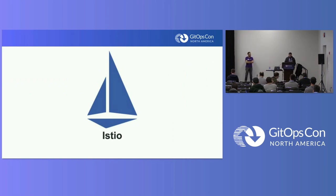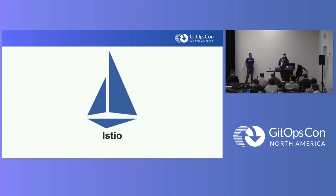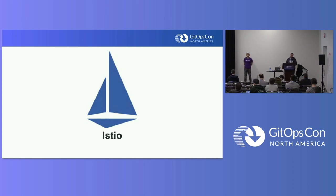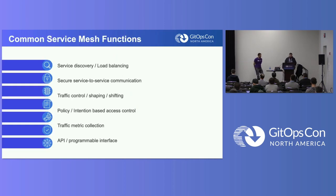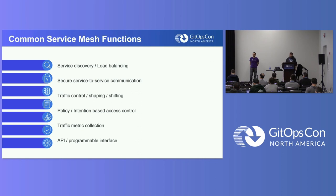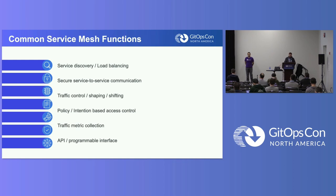Talking about Service Mesh. Istio is an open source Service Mesh. It's also a CNCF incubating project as of recently. The common Service Mesh functions are things like enforced mTLS, application resilience, observability, and granular policy access control — things you can enable for applications without having them change their application at all.